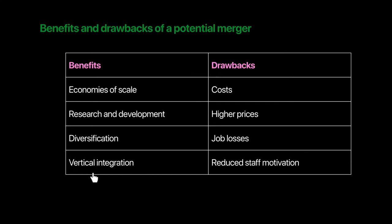Then there is vertical integration. If you're not familiar with vertical integration, businesses might want to merge vertically so that they can control both the production and the sales side. A good example would be a manufacturer and a distributor. So if a manufacturer merges with the distributor, that would essentially eliminate the distributor's profit margin. The cost would go down and you can obviously dominate the market and improve your market share. There are a lot of benefits that firms can achieve with vertical integration.